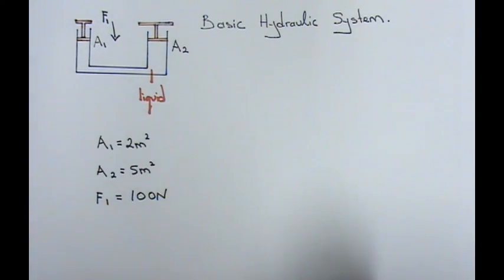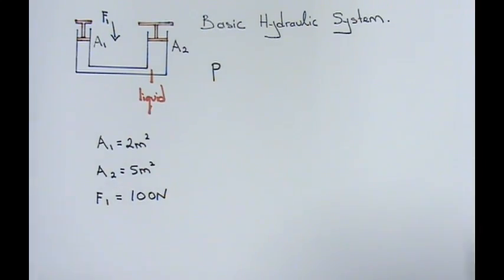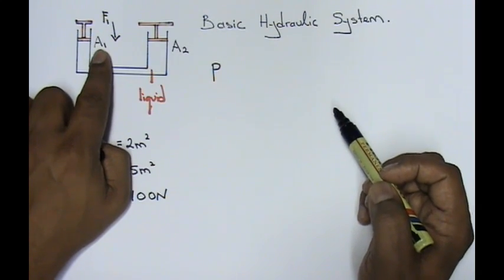First, I'm going to explain to you that the pressure in this enclosed container. Now, you remember Pascal's principle? The pressure in this enclosed container is the same throughout the liquid. At every direction, the pressure over here is the same. Now, moving on to the calculation part.